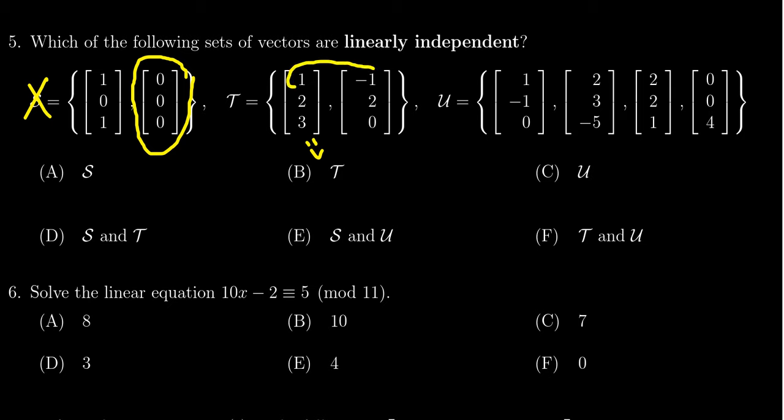If you call this vector v for a moment, then how do you form this one? Looking at the first entry, how do you go from one to negative one? You'd have to times it by negative one. So is this equal to negative v? Well, you take one times negative one, that gives you negative one. But if you take two times negative one, that should give you negative two. That doesn't quite work out here.